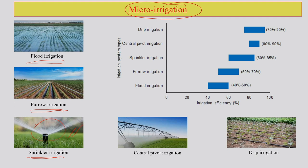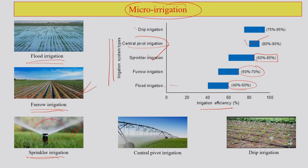There are government schemes under which farmers are encouraged to go for irrigation technology with subsidies and associated training. Looking at the efficiency of different irrigation systems: flood irrigation is around 40–60%, furrow irrigation 50–70%, sprinkler 60–85%, central pivot irrigation 80–90%, and drip irrigation 75–95%. This shows how much water you add versus how much production you get, which is how efficiency is calculated.